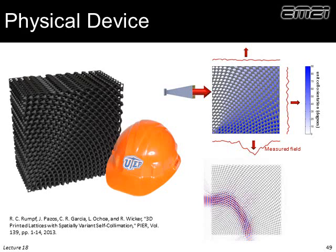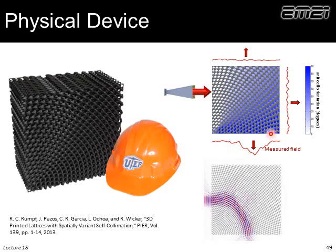One thing we didn't do in this lattice is anything about reflections at the interface. At the first interface some energy scatters but that goes left and disappears. However, the beam hitting the internal interface self-collimates in multiple directions and those scattered waves create noise at the other faces. Had we done something to minimize reflections there, I believe the data would look a lot better.